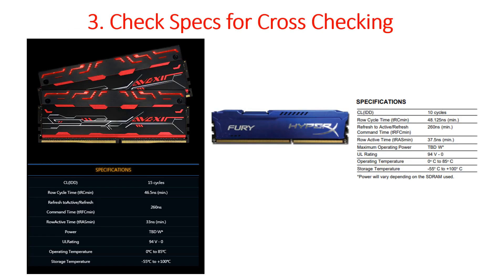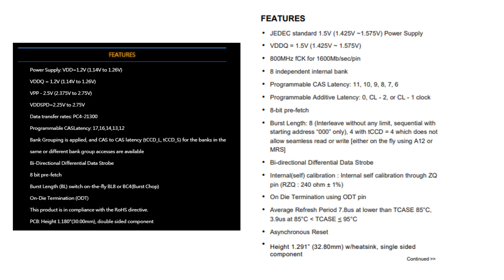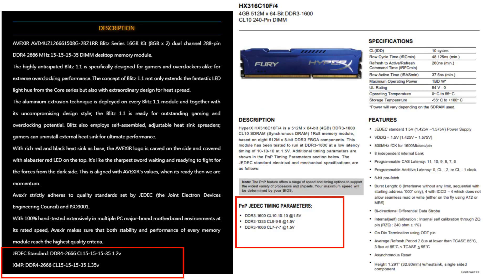Number three: check specs for cross-checking. When you go to the website of the RAM you want to buy, compare the specifications with your current RAM. You want to look at whether the specs tally, and also check the features. Specifically, you need to look at two things: JEDEC and XMP. On screen I have HyperX DDR3 on the right and DDR4 on the left — you can see their CL values differ: CL10 versus CL15, because they are different types.